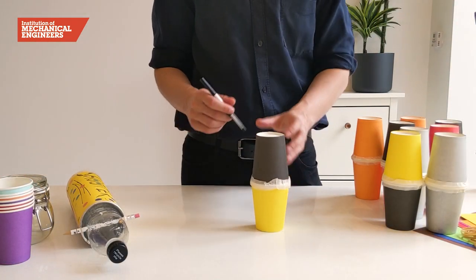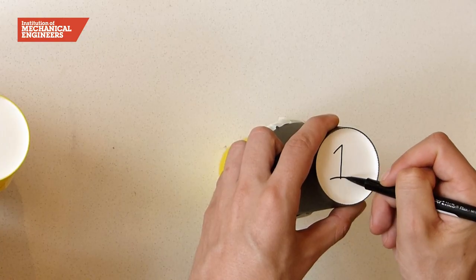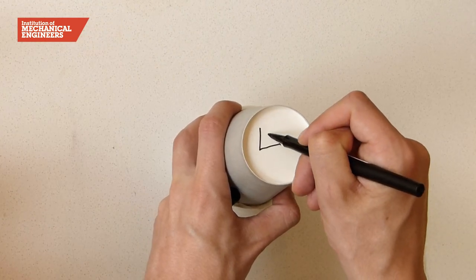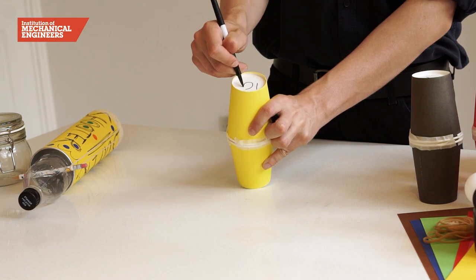If you like, create your own point system by writing a different number on the bottom of each pin. Then, when you're counting the scores at the end, knocking over the biggest point pins will produce the winner.